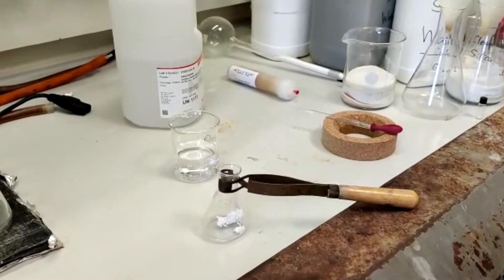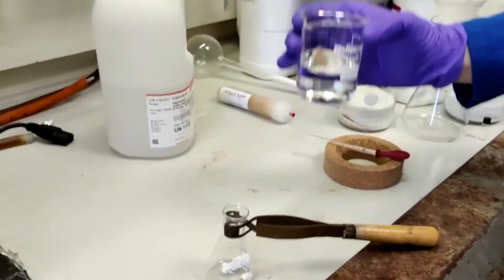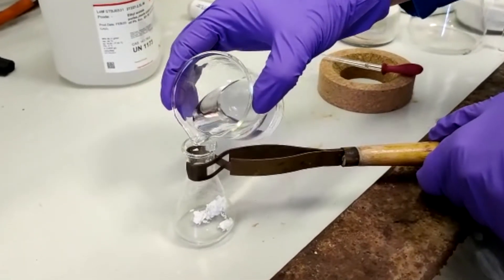So all you want to do is take ethyl acetate in this case, we'll add about 10 to 15 milliliters. And then we're going to use a heat gun to heat this up to boiling.